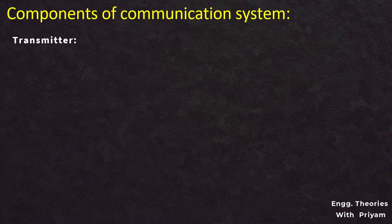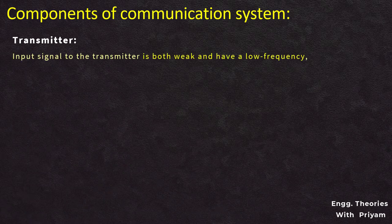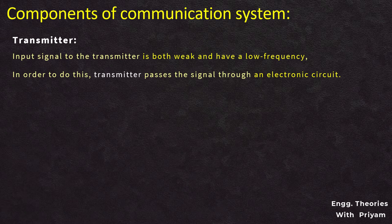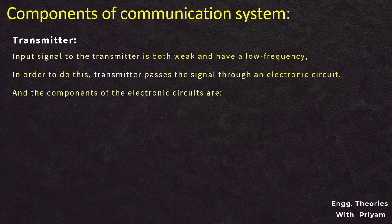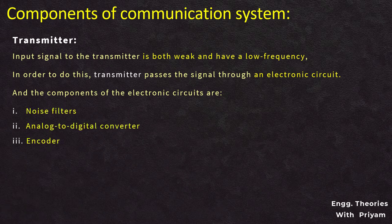The next element is the transmitter. The output of the input transducer is given as input to the transmitter. The transmitter generally takes the signal to the channel. The input signal to the transmitter is both weak and of low frequency, so it needs to be modified for efficient transmission. To do this, the transmitter passes the signals through an electronic circuit whose components are a noise filter, analog-to-digital converter (ADC), encoder, modulator, and signal amplifier.